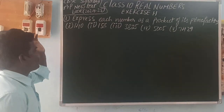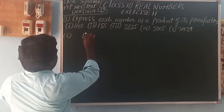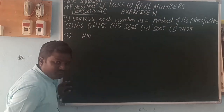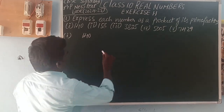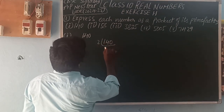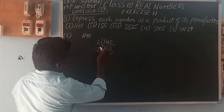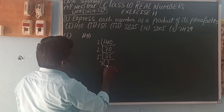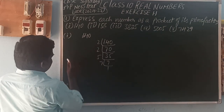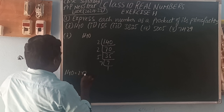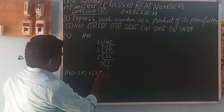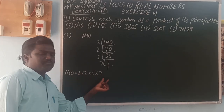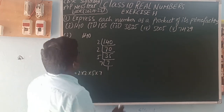The first number is 140. We can write 140 using the prime factorization method — that means dividing with prime numbers. So 140 divided by 2 gives 70, divided by 2 gives 35, divided by 5 gives 7, divided by 7 gives 1. So 140 can be written as a product of prime factors: 2 × 2 × 5 × 7.